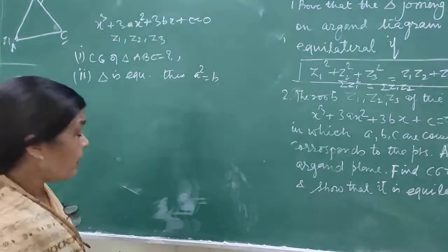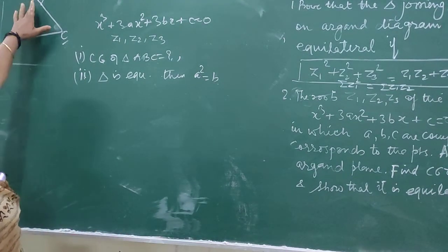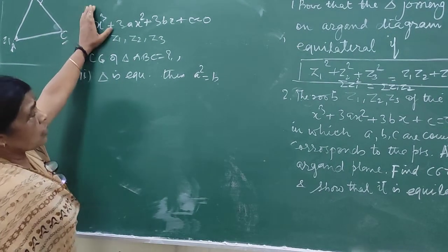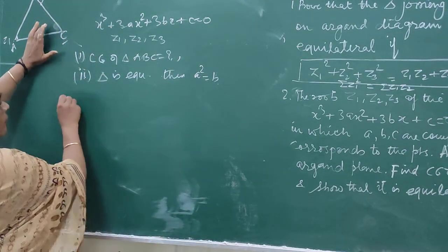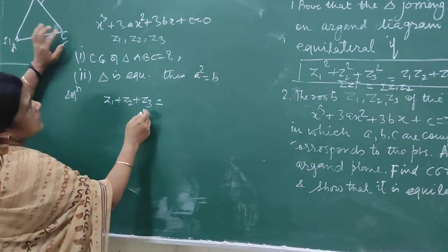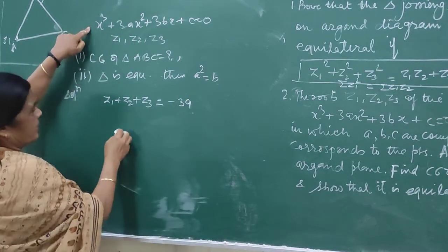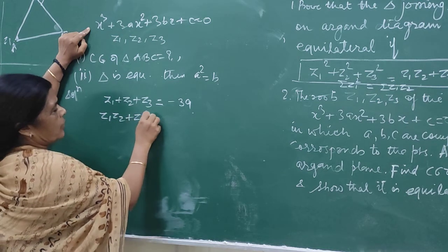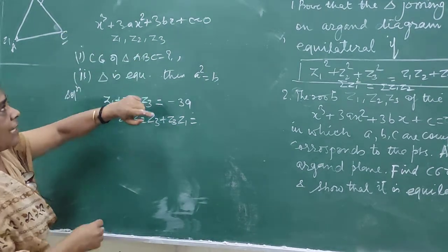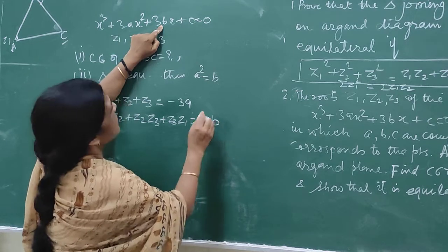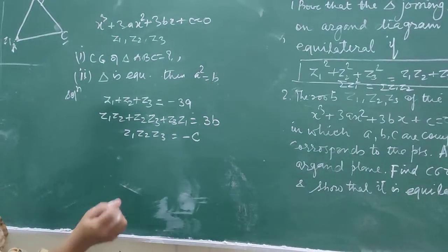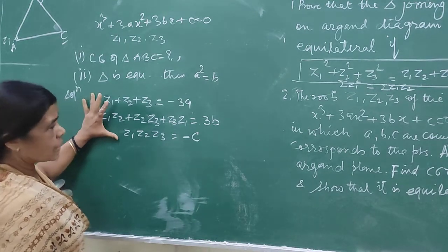To prove this, we know that the centroid of the triangle is (Z1 plus Z2 plus Z3) divided by 3. Now, since Z1, Z2, Z3 are the roots of this cubic equation, by Vieta's formulas: Z1 plus Z2 plus Z3 equals minus 3a over 1. Also, Z1·Z2 plus Z2·Z3 plus Z3·Z1 equals 3b over 1, and Z1·Z2·Z3 equals minus c.